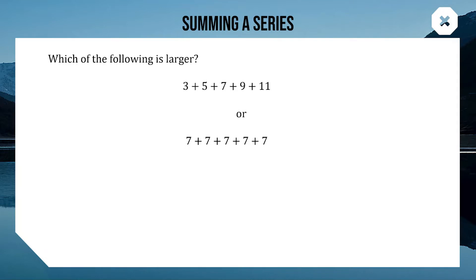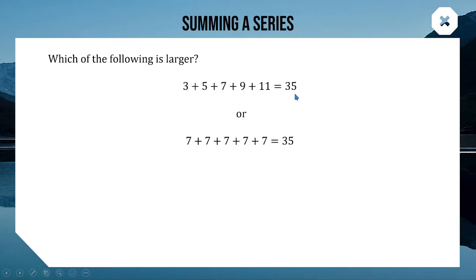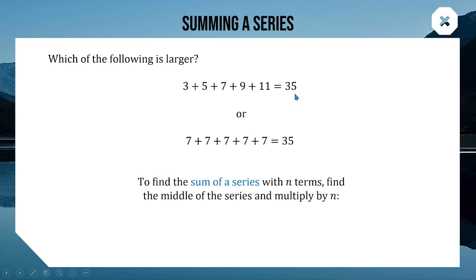If you're looking at these two and saying they have the same value, you are very very smart. The top sum equals 35 and 5 times 7 is also 35. The top one is an arithmetic series and the middle of the series is 7. This means to sum an arithmetic series, all you need is to find the middle number and multiply by how many terms. The middle was 7; multiply 7 by 5 and we get the sum.